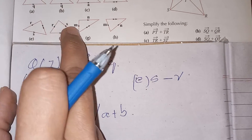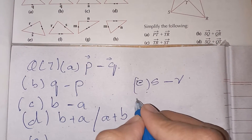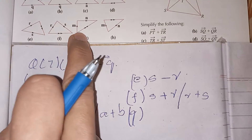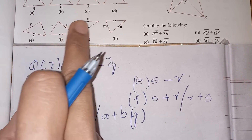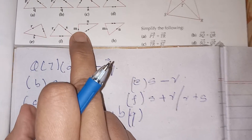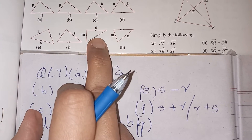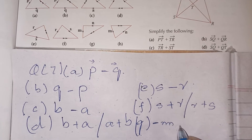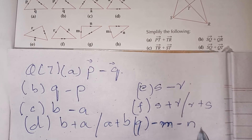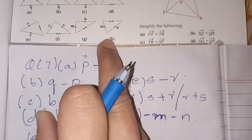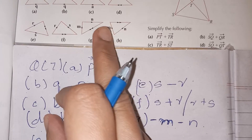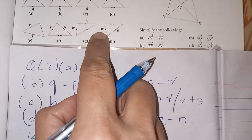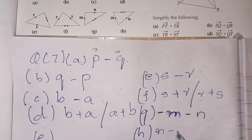For part f, both vectors are in the same direction. We take the negative sign with both vectors to represent the resultant, so part g is minus m minus n. For part h, m and n are not in the same direction. The vector with the same direction as the double-arrowed resultant is m, so the answer is n minus m.